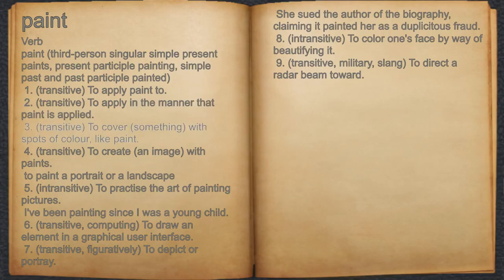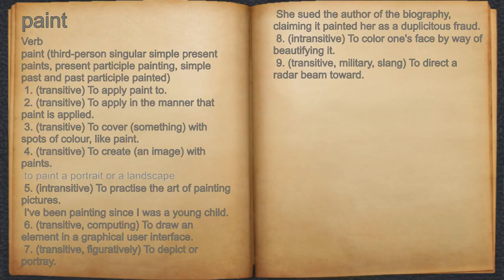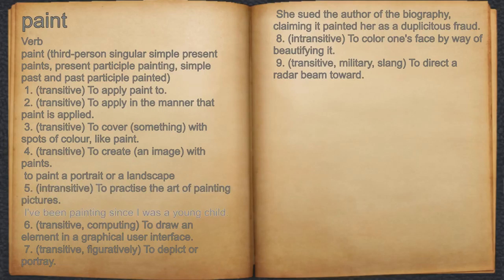3. Transitive. To cover something with spots of color, like paint. 4. Transitive. To create an image with paints. For example: to paint a portrait or a landscape. 5. Intransitive. To practice the art of painting pictures. For example: I've been painting since I was a young child.